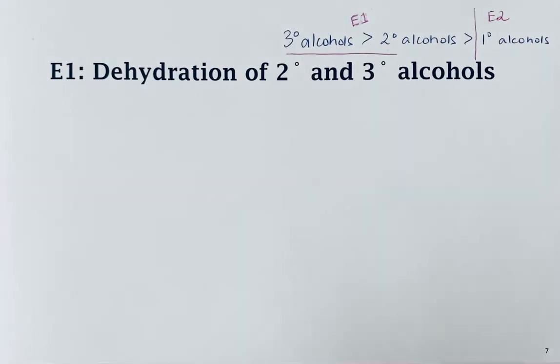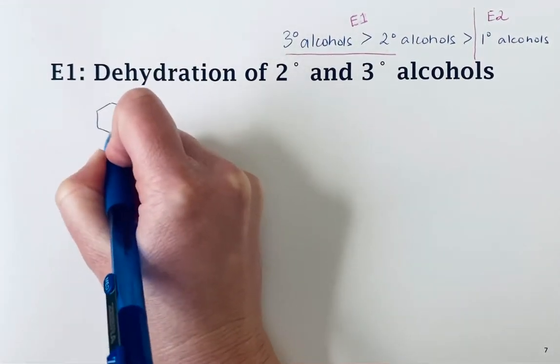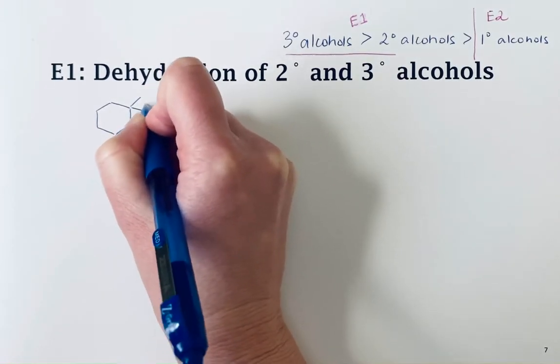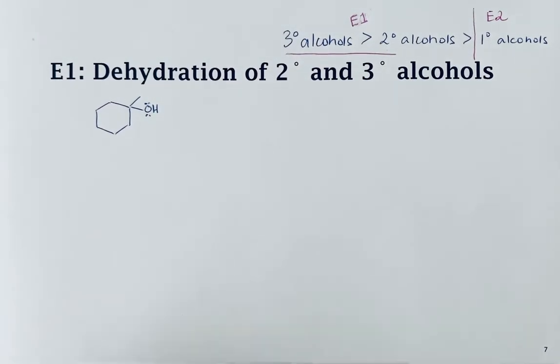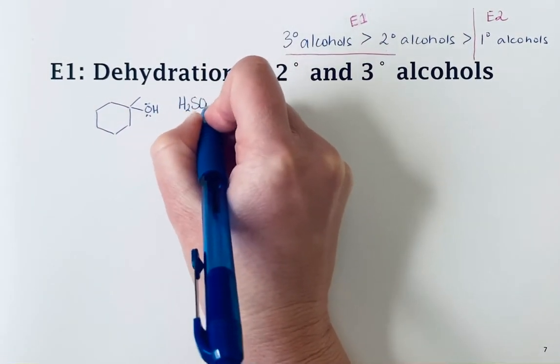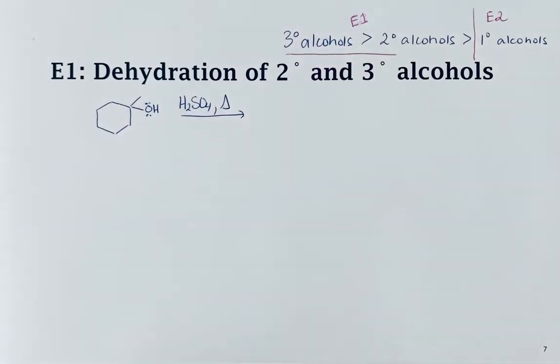Let's look at a few examples. I'm going to start by drawing a tertiary alcohol. If we want to do the E1 reaction, we're going to heat this up with a strong acid—sulfuric acid and some heat—and determine what the major alkene product will be.